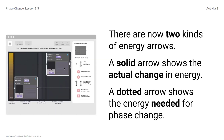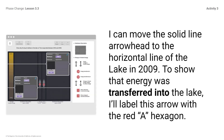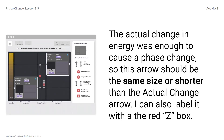There are now two kinds of energy arrows. A solid arrow shows the actual change in energy. A dotted arrow shows the energy needed for phase change. Now you will need to consider how much the energy changed in the substance and if the energy transfer was enough to cause a phase change. I can move the solid line arrowhead to the horizontal line in the lake in 2009 to show that energy was transferred into the lake. I'll label this arrow with a red A hexagon. The actual change in energy was enough to cause a phase change, so this arrow should be the same size or shorter than the actual change arrow.